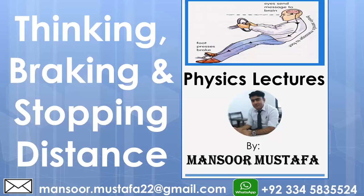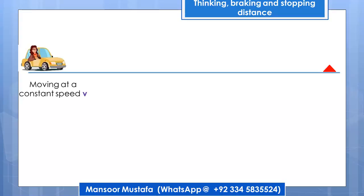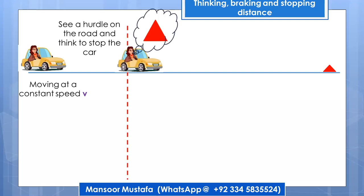Hello dear students, this is Mansur Mustafa. In this video we will discuss thinking distance, braking distance, and stopping distance. Consider a scenario: you are driving at a constant speed v. After an instant, you realize there is some obstacle on the road, and you have to apply the brake.